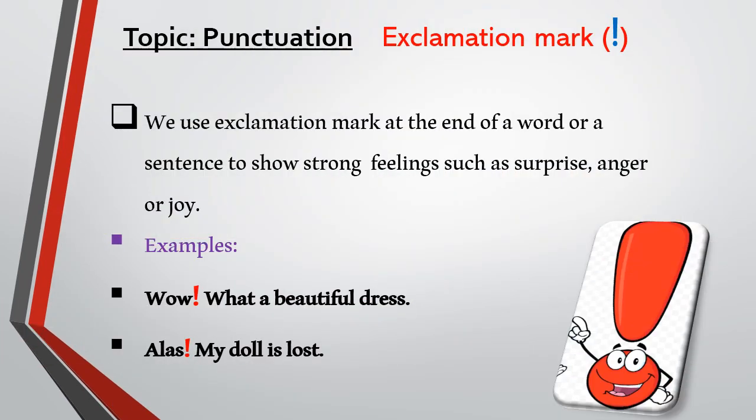Another punctuation is the exclamation mark. We use an exclamation mark at the end of a word or sentence to show strong feelings such as surprise, anger, or joy. For example: 'Wow, what a beautiful dress!' Another example showing loss: 'My doll is lost!' So we can use the exclamation mark after expressing our feelings.